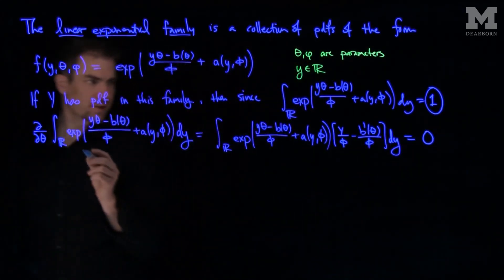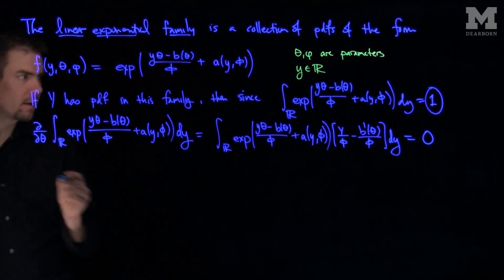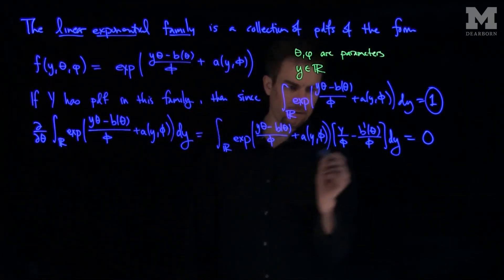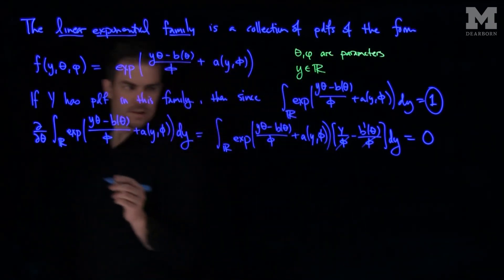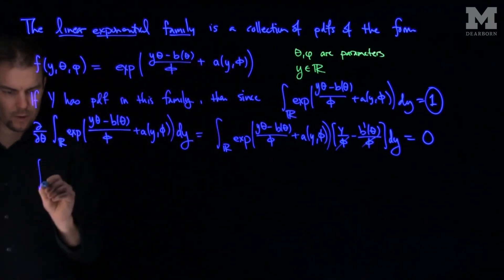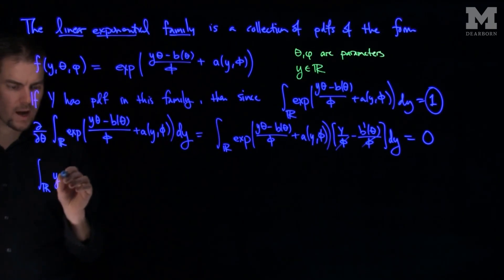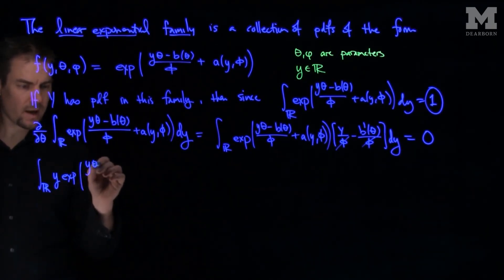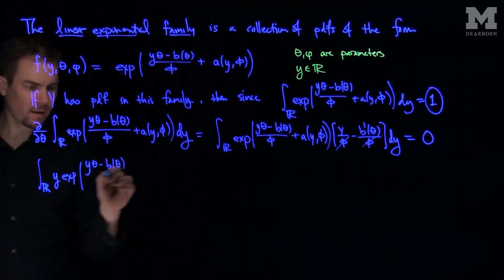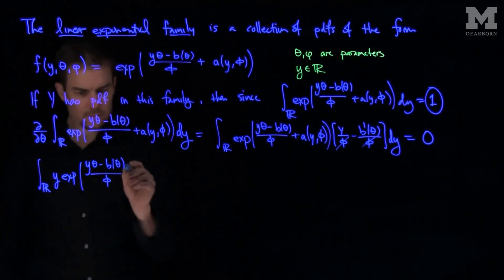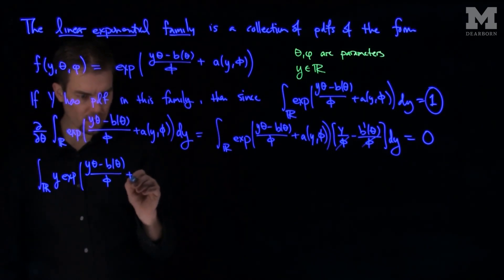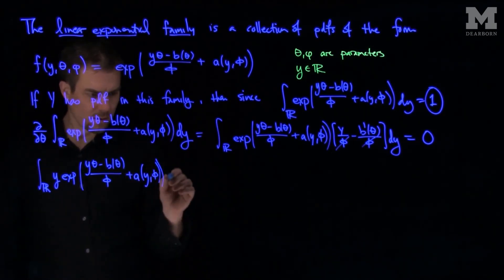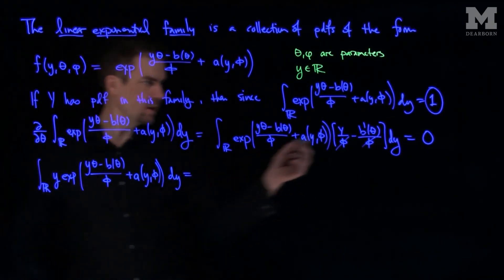What this tells us is that we can cancel out the φ factor. This means the integral over ℝ of y times exp((yθ - b(θ))/φ + a(y,φ)) dy equals...